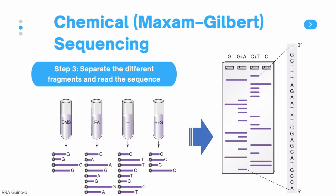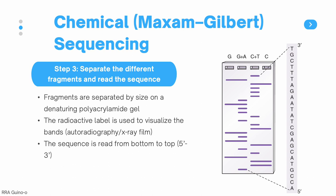The last step in chemical sequencing is the separation of different fragments and the reading of the sequence. These fragments are loaded into a gel and separated based on their size using electrophoresis on a denaturing polyacrylamide gel. The radioactive label added in step one is used to visualize the bands, either using autoradiography or by exposing the gel to an x-ray film.